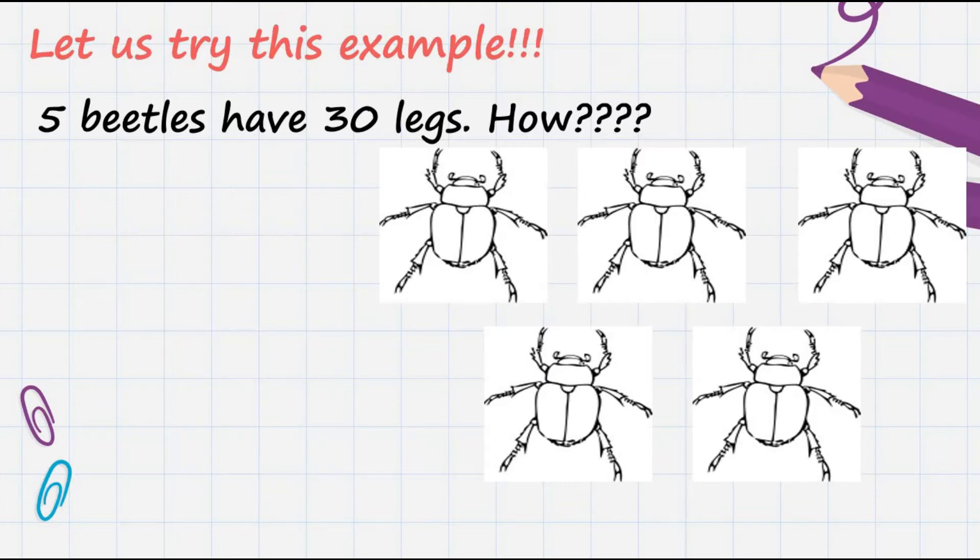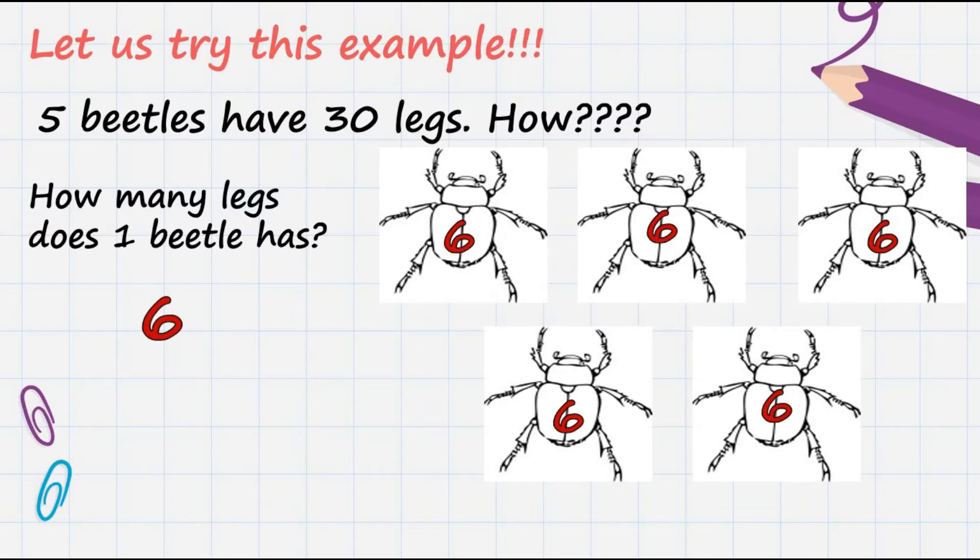Let us answer the following questions. First question: How many legs does 1 beetle have? Very good. 1 beetle has 6 legs.